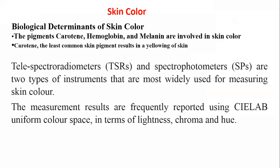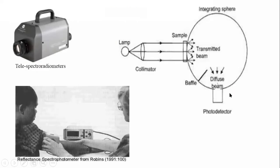Skin color is a factor of skin depending on the pigments present in the skin — that is melanin, hemoglobin, and carotin. These pigments generally decide the color of the skin. An excess amount of carotin can cause a yellowish color of the skin. Skin color is generally measured by using two instruments: the telespectrodiameter and the spectrophotometer. The spectrophotometer is recently evolved for measurement of skin tone, while previously the telespectrodiameter was utilized. The principle behind color measurement is that a lamp introduces a beam of light that passes through the skin sample, is transmitted to another direction, and the diffuse amount of light is calculated using photodetectors.